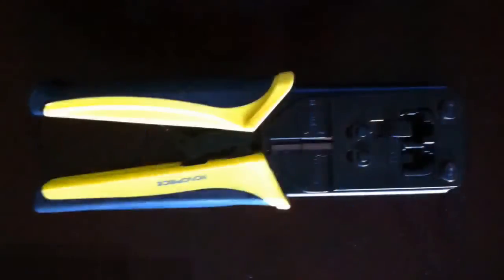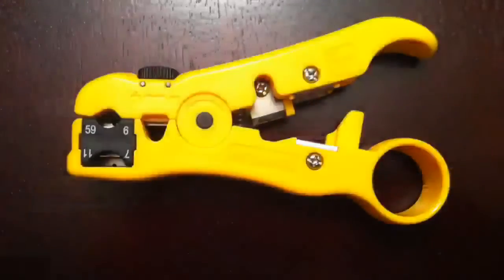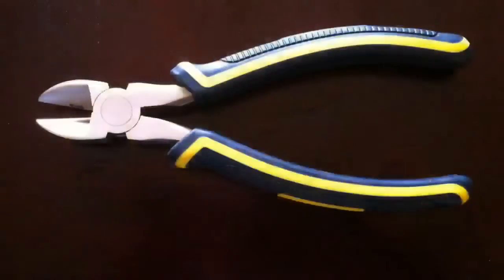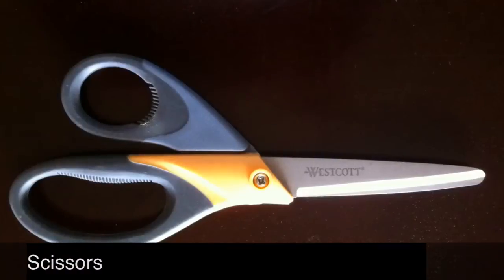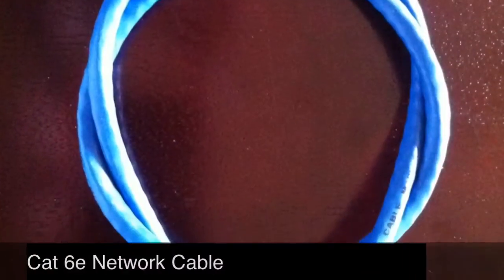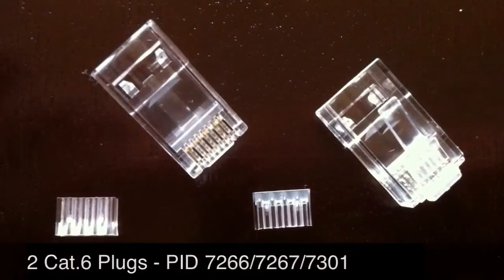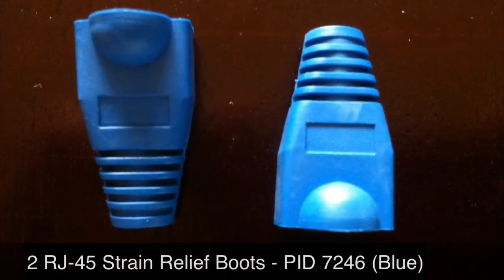The tools we are going to need for this project are a modular plug crimper, a universal cable jacket stripper, a set of side cutters or cutting pliers, a pair of scissors, a length of CAT6 network cable, two CAT6 modular plugs, and two strain relief boots.